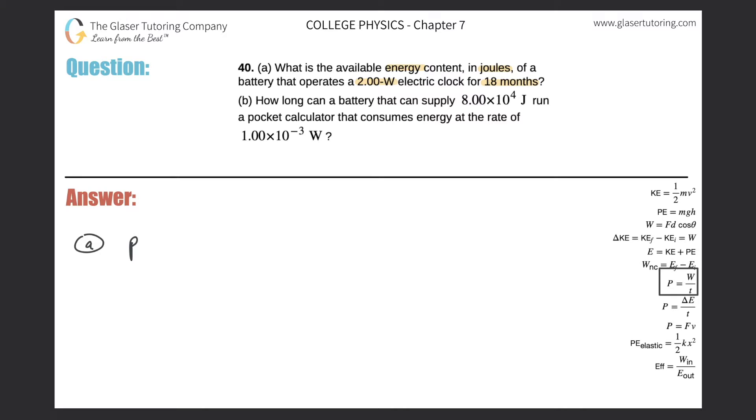It says that power is equal to the work divided by the time, P = W/t. They gave us power in watts, so that's great. Two watts of power will equal the work, and that's what we're looking for because work is in terms of energy, in terms of joules.